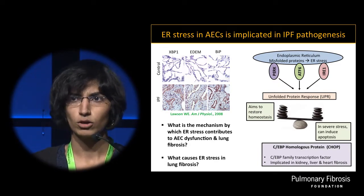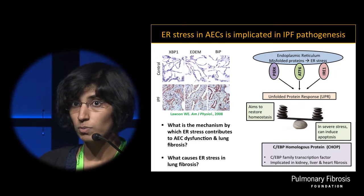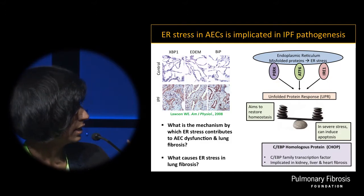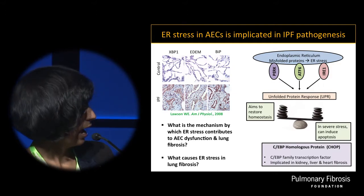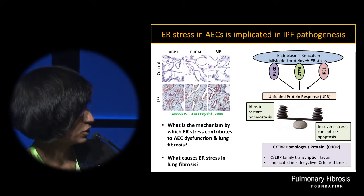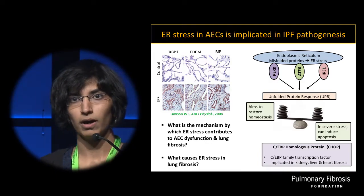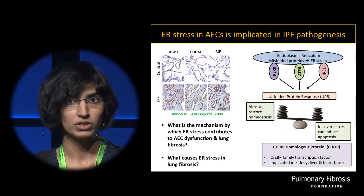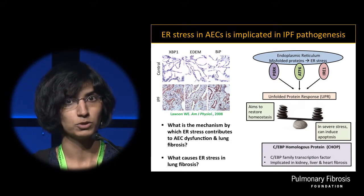When a cell has lots of misfolded proteins, it experiences ER stress. In response to ER stress, three ER transmembrane proteins — namely PERK, ATF6, and IRE1 — get activated. These proteins can together launch a cell signaling network called the Unfolded Protein Response, or UPR. The function of the UPR is to restore cellular homeostasis; however, when ER stress becomes severe or unmanageable, the UPR can induce apoptosis as well.